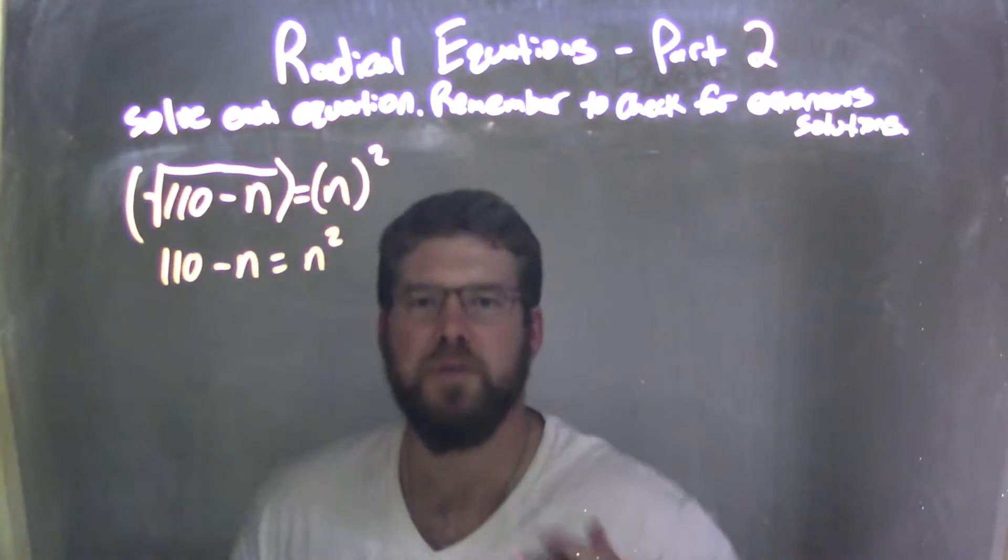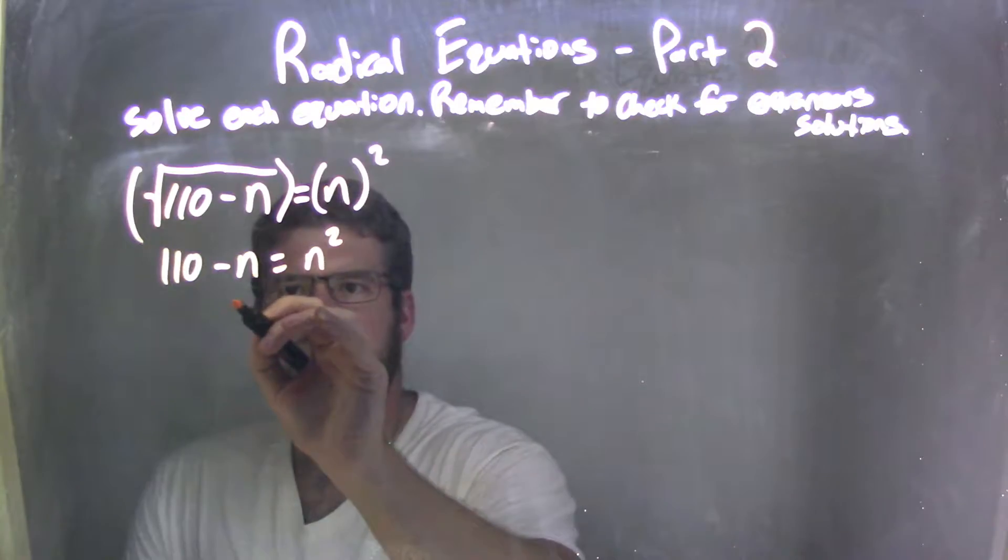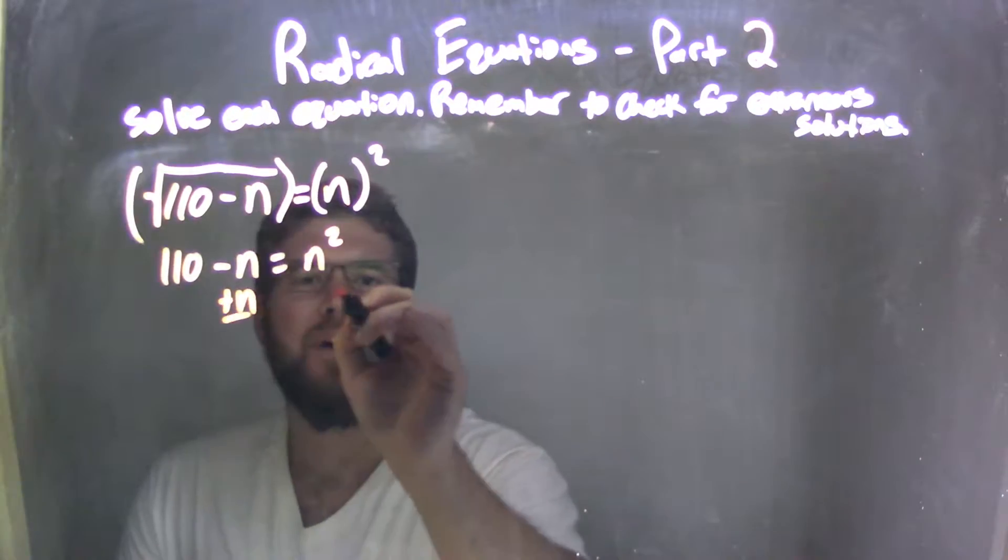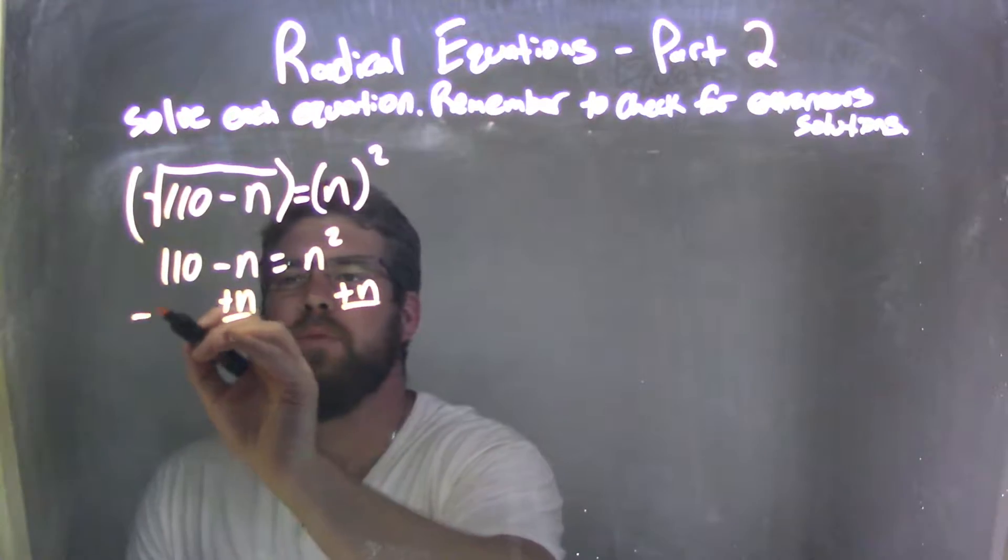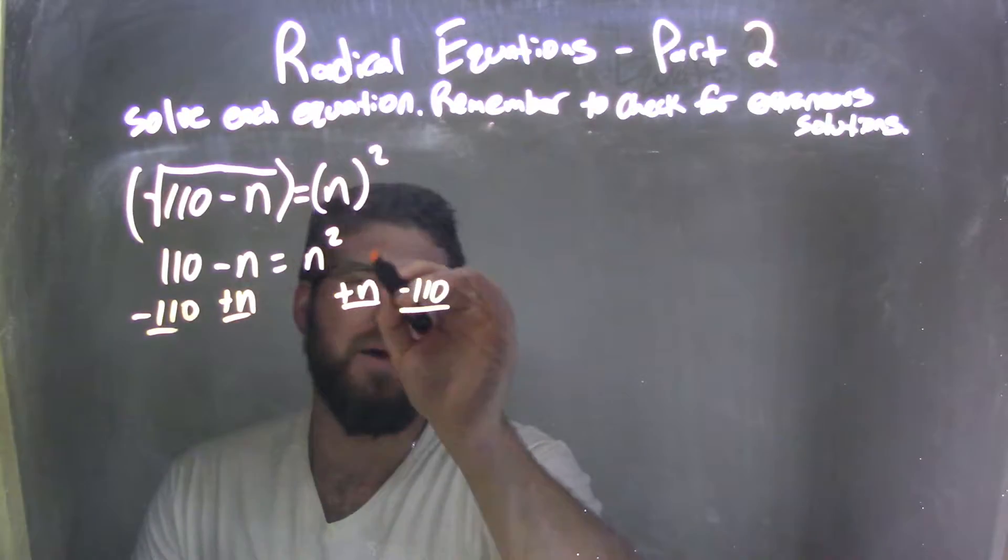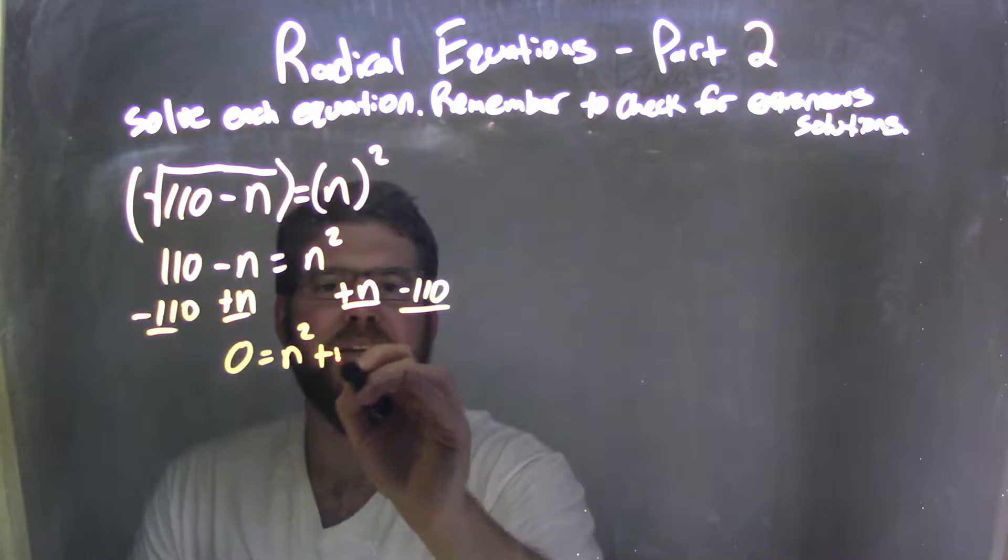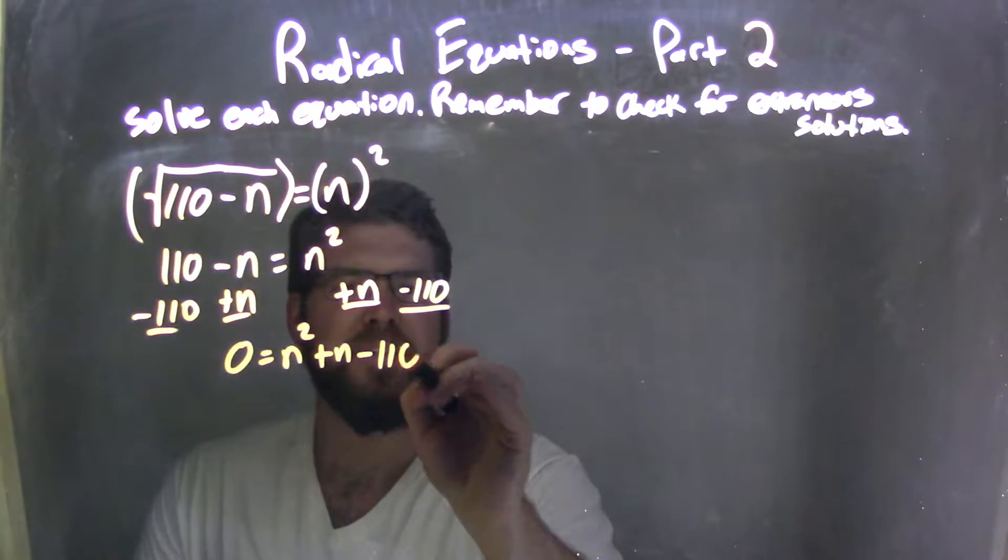Now I'm going to get everything over to one side and set it equal to zero so I can factor. So I'm going to add n to both sides here, and I'm going to subtract 1/10 from both sides. So I have zero equals n squared plus n minus 1/10.